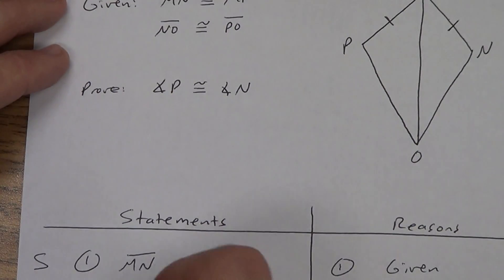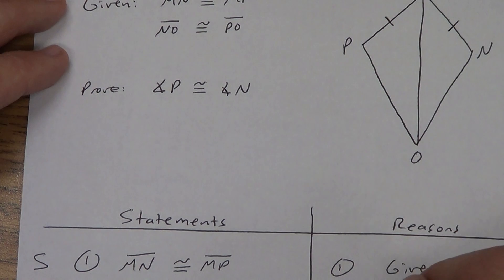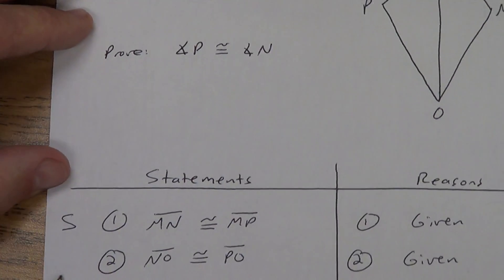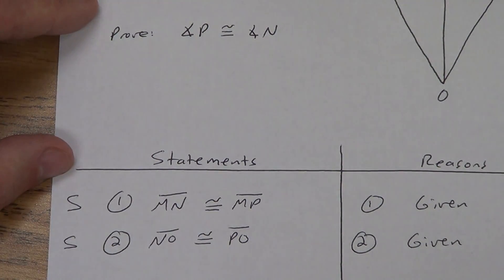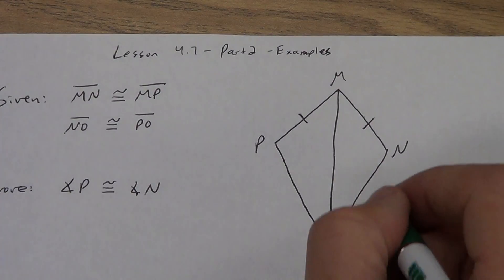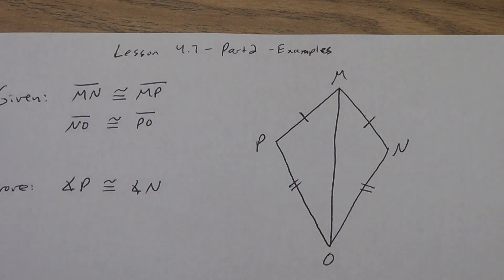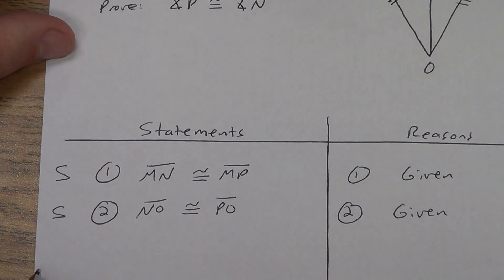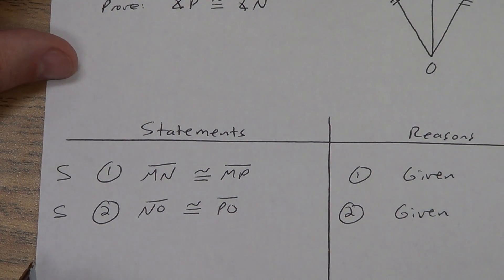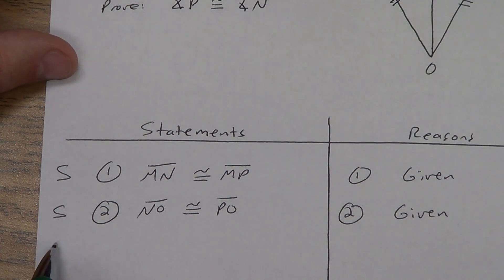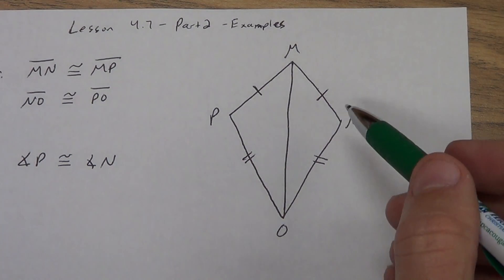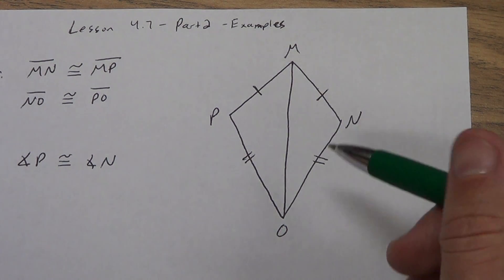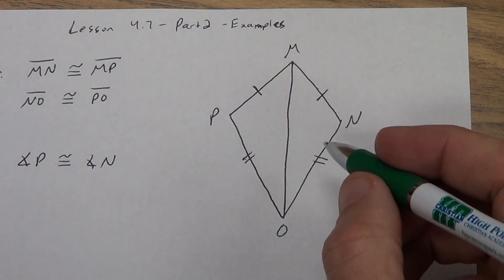I also know that NO is congruent to PO — step 2. Some people put both givens into step 1, and that's okay, but it's a little harder to write your S's and A's off to the side. So there's a second side. I'm going to mark the picture up as well. Every now and then it's good to stop in your proof and ask yourself: do I have enough information to prove my triangles are congruent? Right now, the answer is no — I only have two sides.